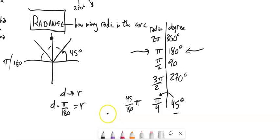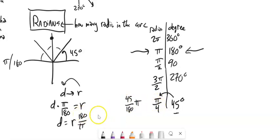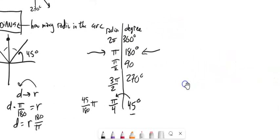If you want to go the other way, multiply by the reciprocal — 180 over π. So if you're in radians, degrees equals radians times 180 over π. Get rid of the π and bring in the 180, because the number in there is a fraction of 180.